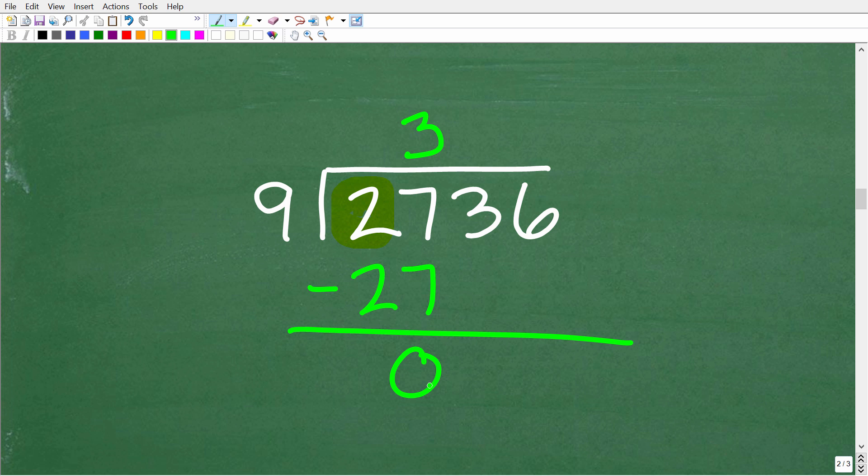So can 9 go into 0? No. So what we're going to do is drop a digit down. We're going to take this 3 and drop it down right here. All right, so can 9 go into 3? No, it cannot. So at this point, what we need to do is put a 0 as a placeholder. 9 cannot go into 3. So we're going to have to add another digit. Of course, we'll drop down this 6.